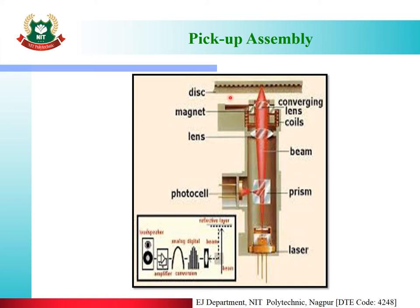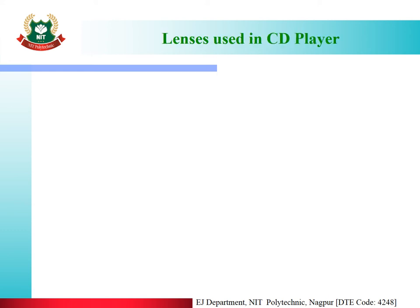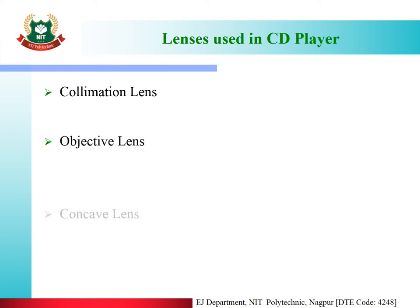This is the pickup assembly with the magnet — this is the complete pickup assembly. The lenses used in the CD player are: collimation lens, objective lens, concave lens, and cylindrical lens.